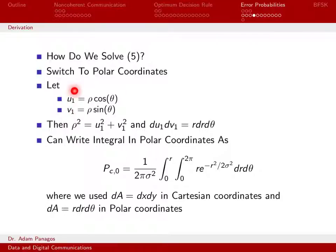We're going to do a change of variables. Instead of rectangular coordinates U1 and V1, we switch to polar coordinates with radius ρ and angle θ. U1 becomes ρ cos(θ) and V1 becomes ρ sin(θ). Then ρ² equals U1² plus V1². When you do the differential change, dU1 dV1 becomes r dr dθ. Switching to polar coordinates, we can write this with respect to r and θ.